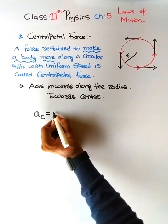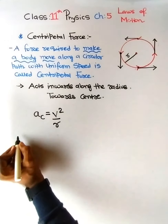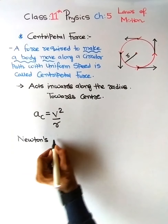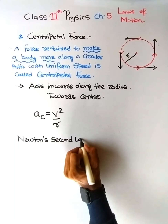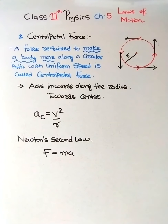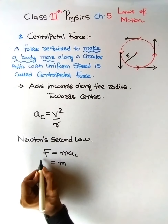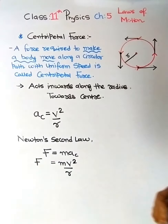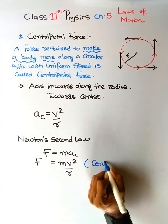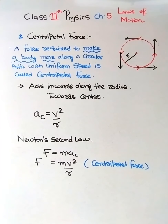When we studied uniform circular motion, we derived centripetal acceleration: ac = v²/R. According to Newton's second law, F = ma. For an object performing uniform circular motion, this acceleration is the centripetal acceleration. So the centripetal force is Fc = mv²/R. This is the force needed to make the object move properly in a circular path.